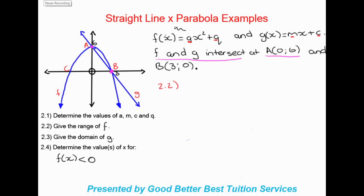Next, question 2.2 asks for the range of f, which is our parabola. Range refers to the y-values. The parabola heads downward from its turning point at y = 6, so the y-values start at 6 and decrease from there. Therefore the range is y ≤ 6.